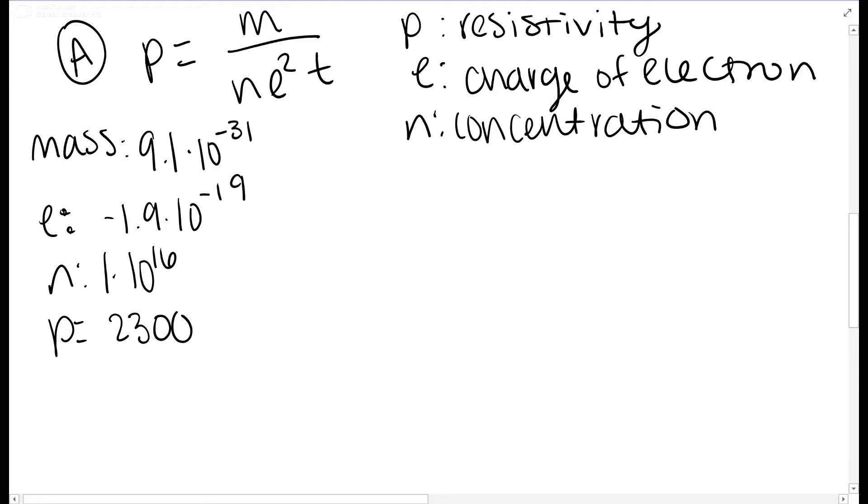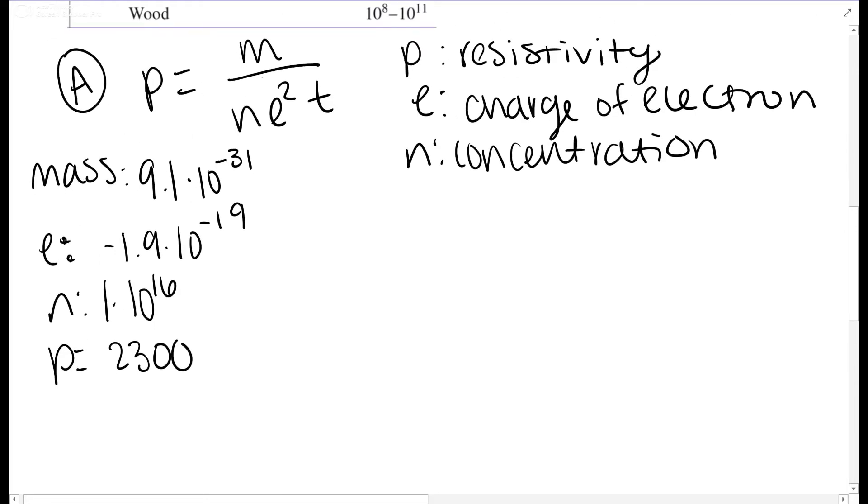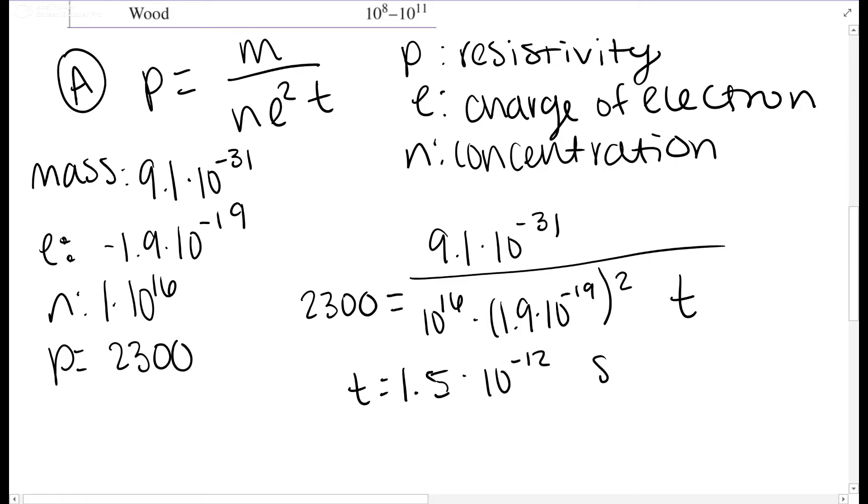All that's left is to put it into your equation and solve for t. 2300 equals 9.1 times 10 to the negative 31st over 10 to the 16th times 1.9 times 10 to the negative 19th squared times t. Solving for t, you get 1.5 times 10 to the negative 12 seconds.